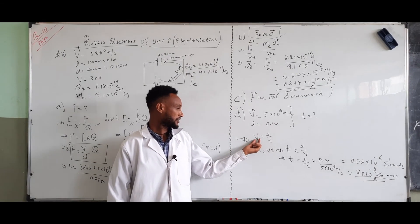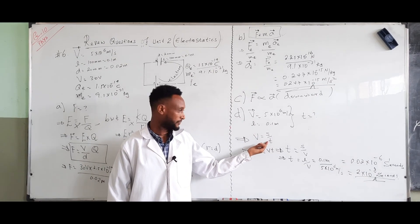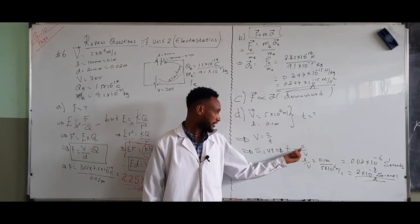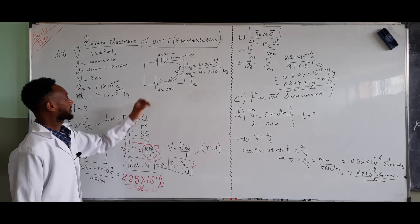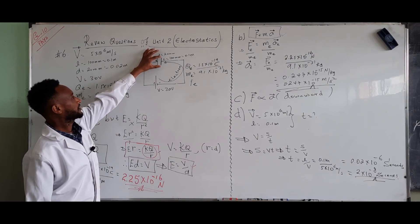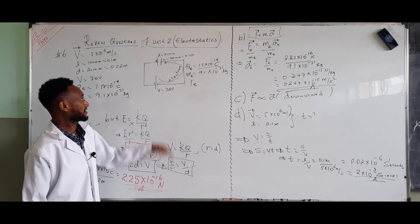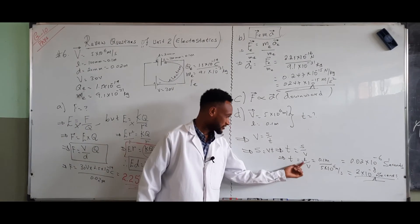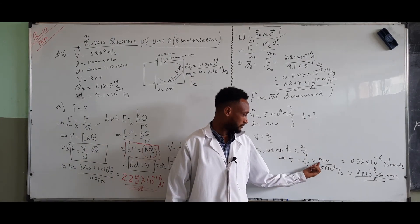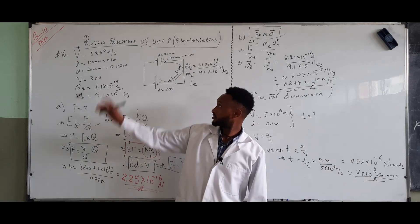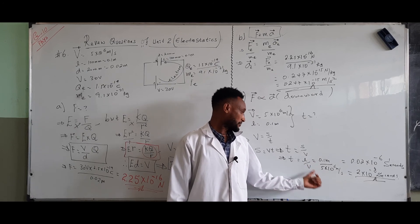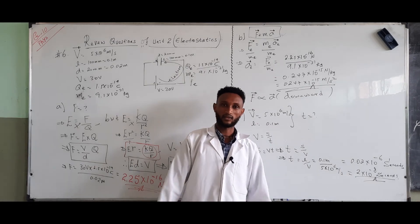To summarize part D: speed equals distance over time, so time equals distance over speed. The distance is the length of the plate, 0.1 meters, and the speed is given. The electron takes 2 times 10 to the power of negative 8 seconds to pass through the plates.